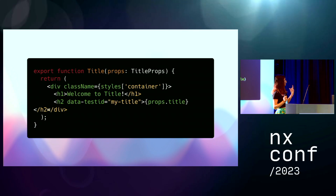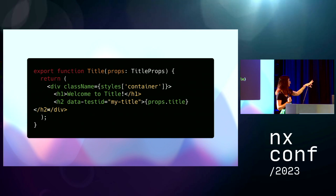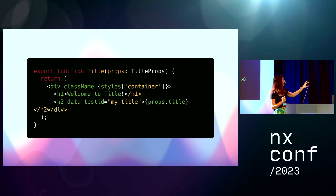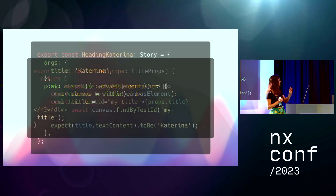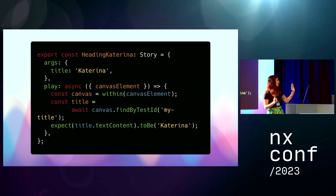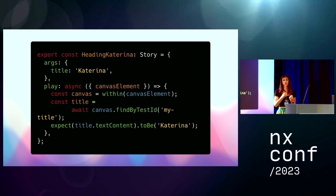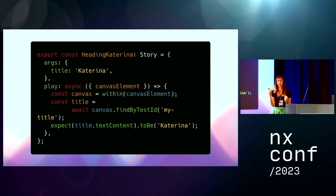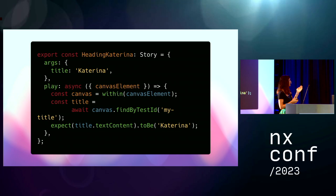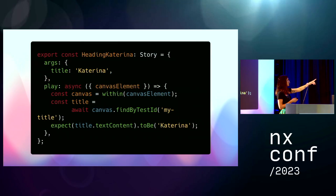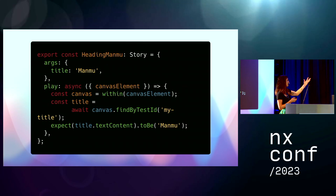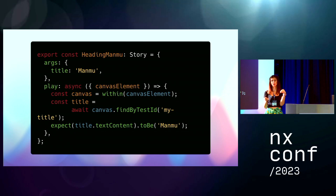Another example: if you have a React component which is just a title and a second heading with a data test ID of 'my title,' you can go and do canvas.findByTestId and expect the text content to be 'Katerina.' In your stories you have props — the React props — which are set using the args attribute in your story. So if you're having different props, you can pass different titles, and with the play function, assert that the props are getting updated the way that you want them to be updated.